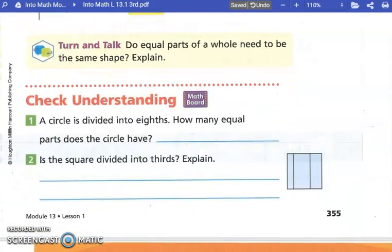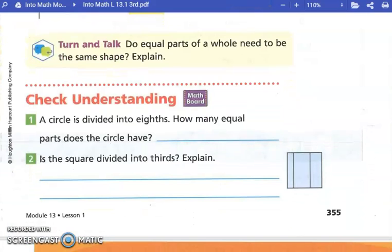A circle is divided into how many equal parts? Eight. Now listen to number two. Is the square divided into thirds? It's divided into three pieces, but it isn't thirds. Why not? Because it's not equal. Go ahead and check your understanding.